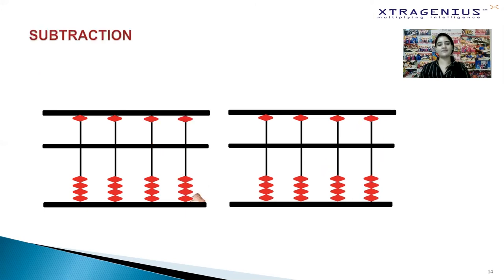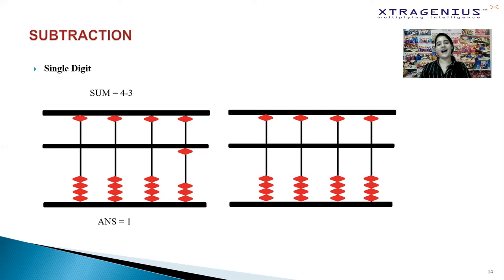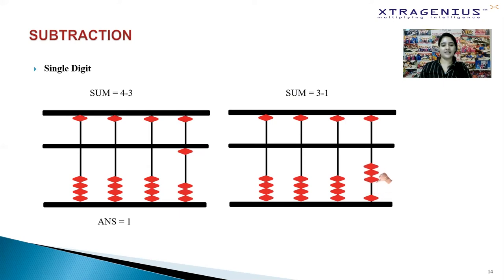Now it's time to move on to subtraction, starting with single digits. For 4 minus 3: set 4 on your abacus by moving 4 beads in the units place towards the center bar. In subtraction, instead of adding beads we remove them — so to take 3 away from 4, move 3 lower beads in the units place away from the center bar to the home position. What you're left with is 1 bead, which is your answer. Try the next problem on your own: 3 minus 1. If you're left with 2 beads in the units place, you have the correct answer.